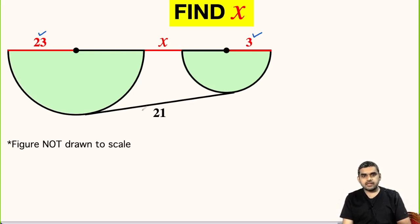We have a line segment here which measures 21 units. So let us name it as AB. Now it is given that this figure is not drawn to scale. What we need to find is the value of x.